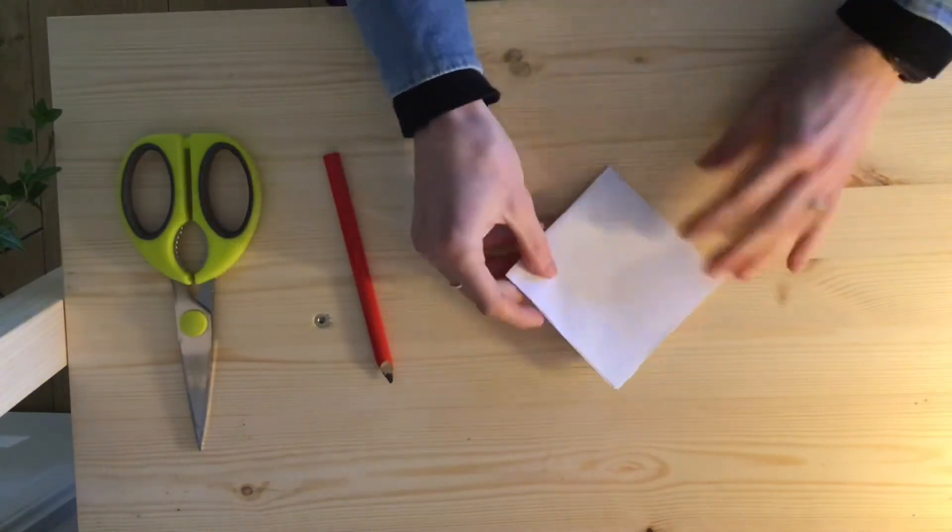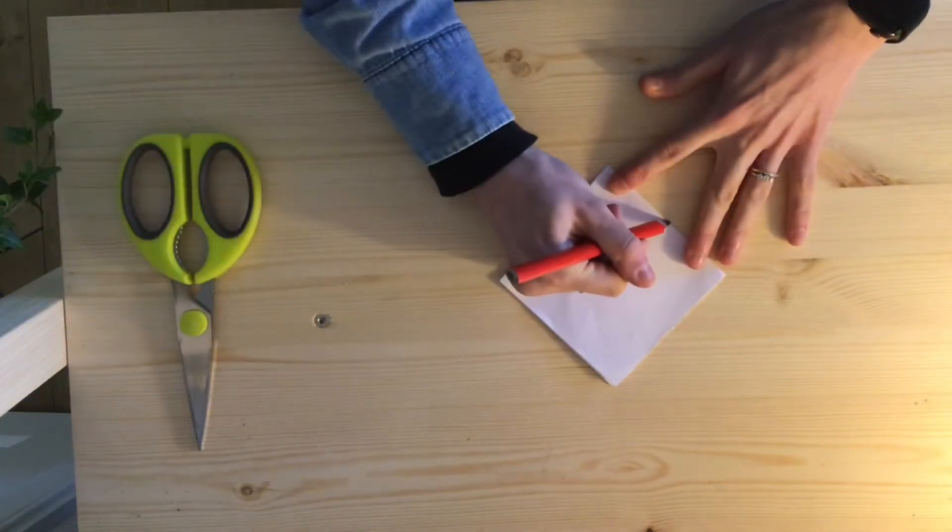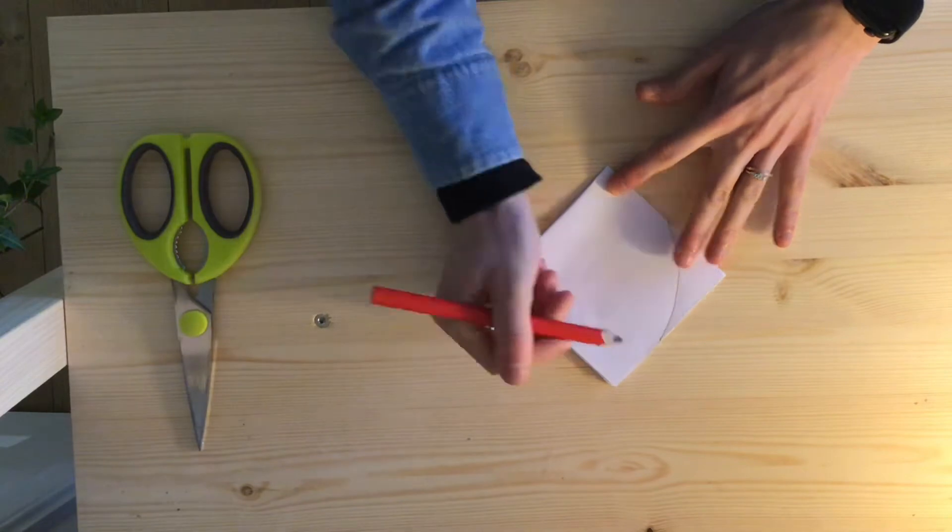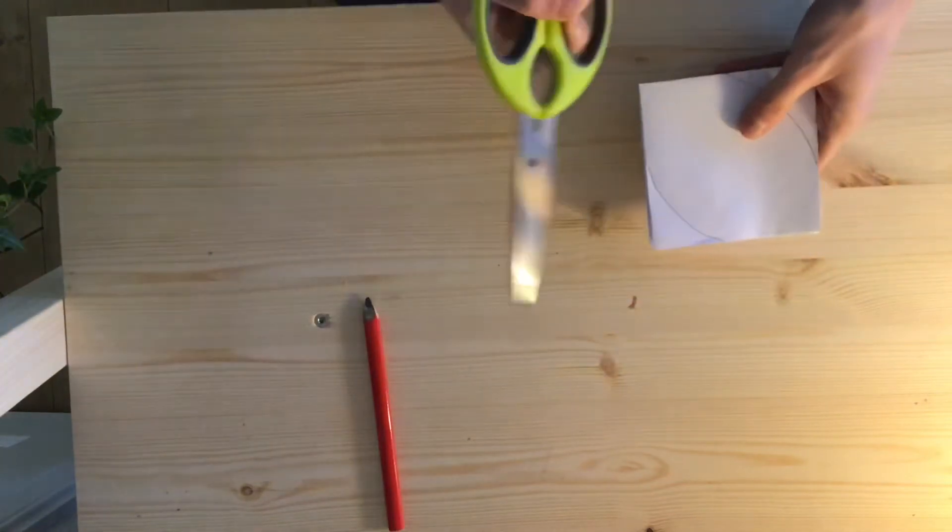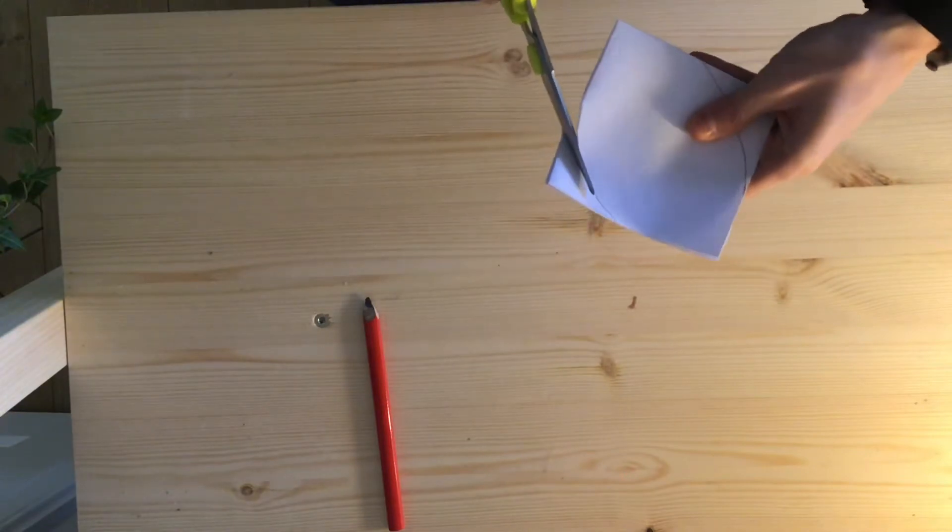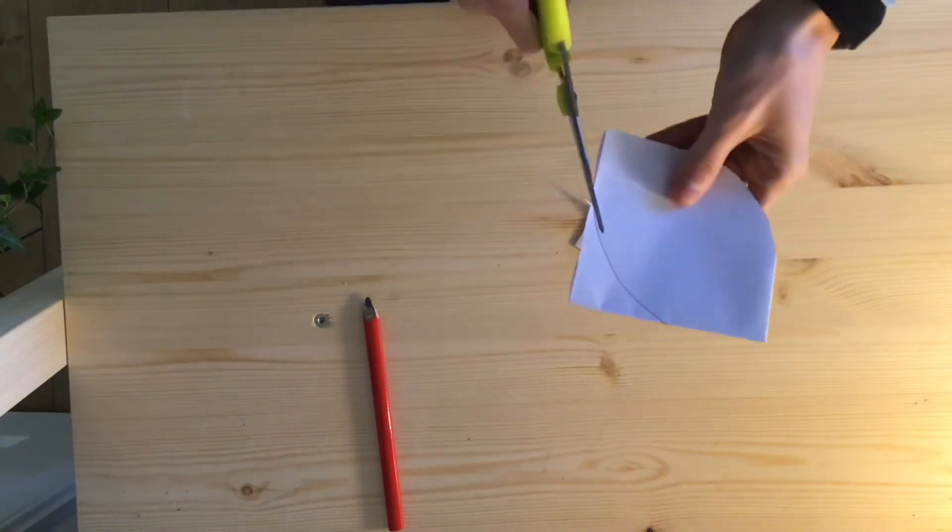Then draw a petal shape outwards from the folded corner. Ask an adult to make sure you've got the right corner. Then cut around the shape to make petals. Be careful with scissors and remember to ask for help if you need it.